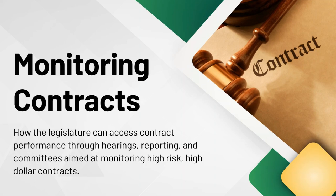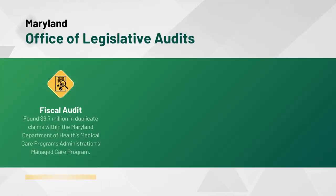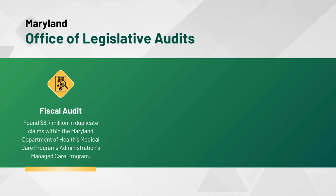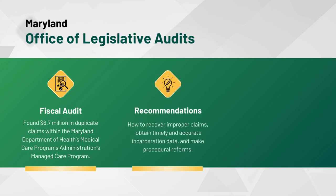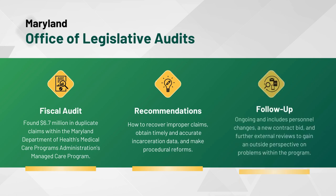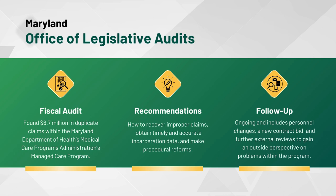Monitoring contracts is how the legislature can access contract performance through hearings, reporting, and committees aimed at monitoring high-risk, high-dollar contracts. Maryland's Office of Legislative Audits found $6.7 million worth of duplicate claims within the Maryland Department of Health's Medical Care Program Administration's Managed Care Program through a fiscal audit. Recommendations were made to the agency on recovering improper claims, obtaining timely and accurate incarceration data, and procedural reforms. Follow-up is ongoing and includes personnel changes, a new contract bid where the underperforming current contractor did not rebid, and further external reviews to gain an outside perspective on the problems within the program.